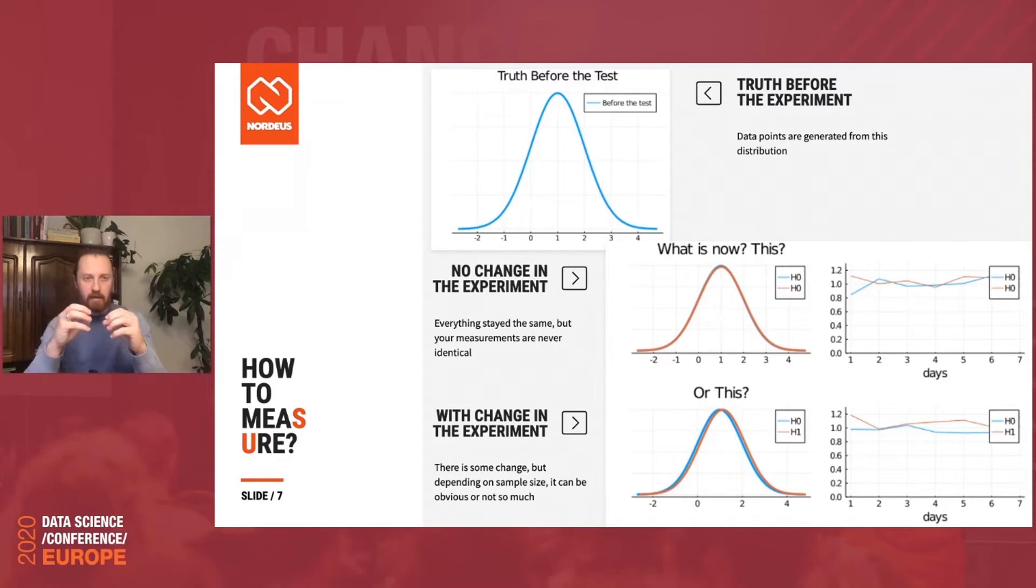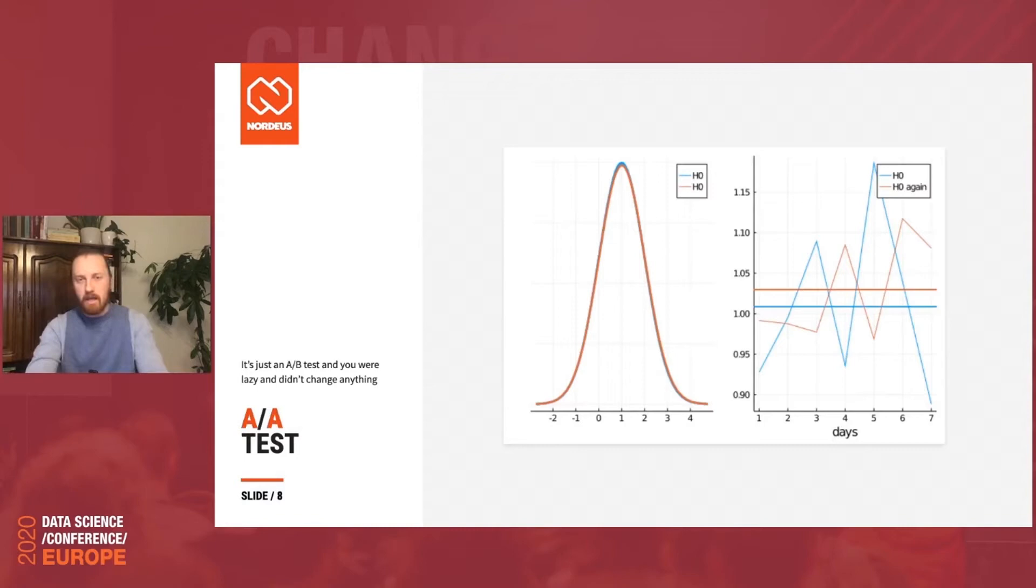And now you need to figure out what's actually going on. Do you have this change? Have you managed to improve something? Or you're just measuring the same thing in two different ways. And from these images, it looks like it's a trivial choice. If the red line is consistently above the blue line, then we obviously made some improvement. And if they're close, then, well, probably we have failed. But it's not that easy. And you can get the feel about this if you do a simple AA test.